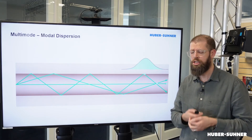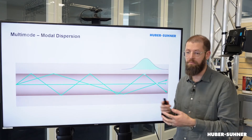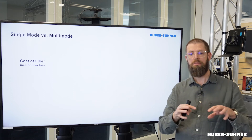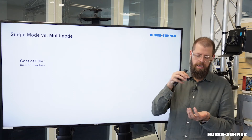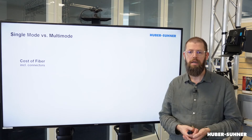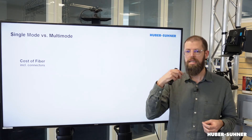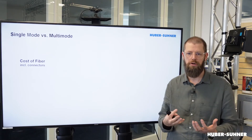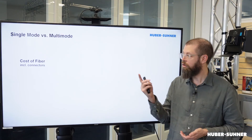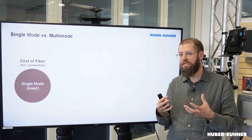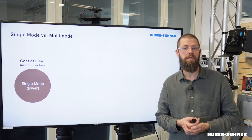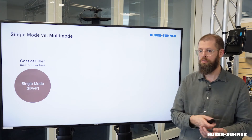So why do we still use both single-mode and multi-mode? Let's start with the cost of fiber. For a long time it was stated that multi-mode is more cost-effective than single-mode because the manufacturing process is simpler. But that's not the case anymore, because single-mode is being manufactured in much larger volumes, meaning the cost difference is now negligible. Also, for multi-mode we are using more complex connectors — MPO and MTP — whereas for single-mode we generally use LC connectors, which are much more cost-effective.